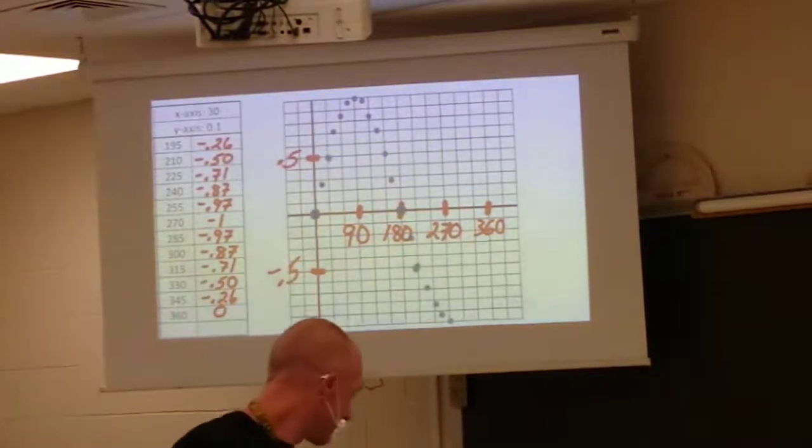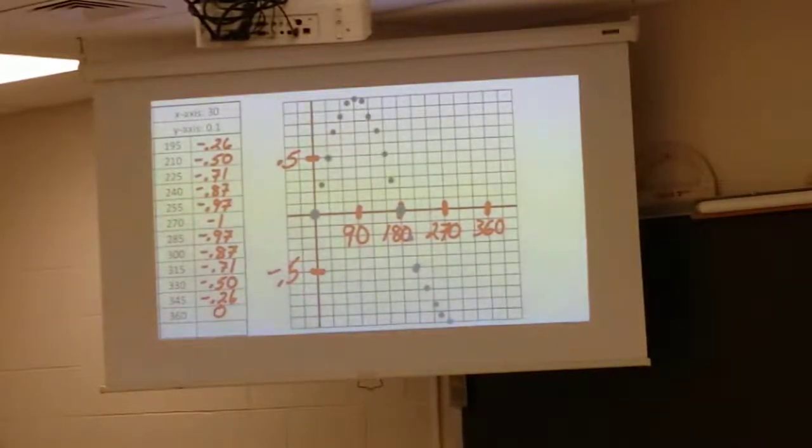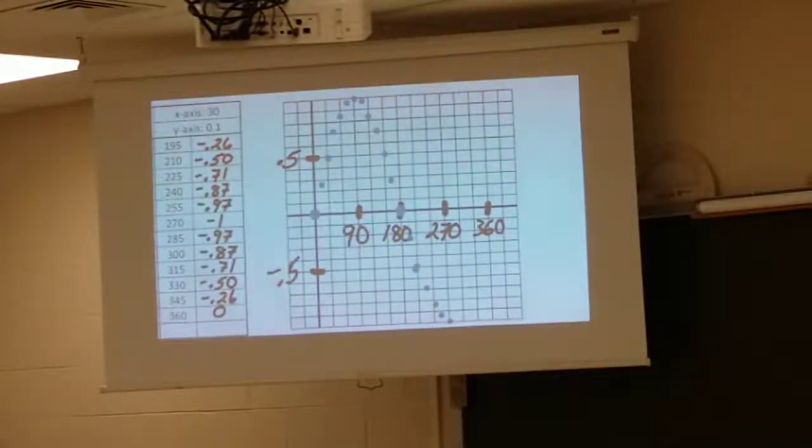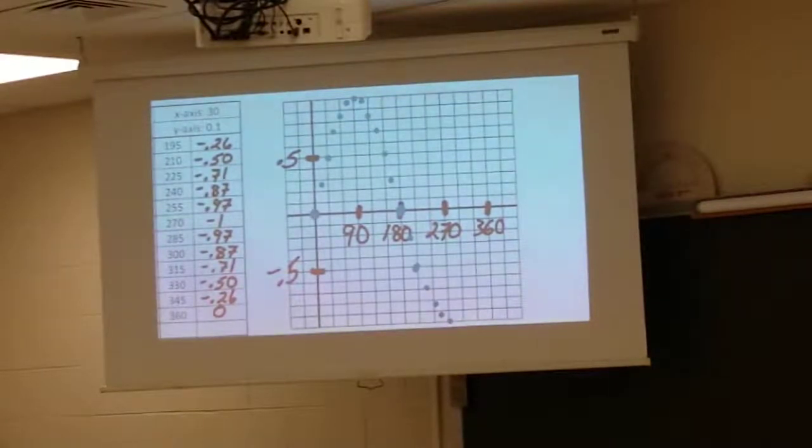Now, once you have all your points plotted, you ultimately connect the dots, because remember that the graph is not just all these dots, but the graph is actually the line that connects the dots. And when you do connect the dots, it's just a nice smooth curve, and that nice smooth curve is called the sine wave.